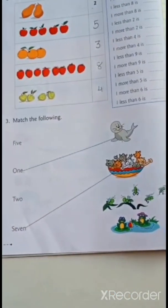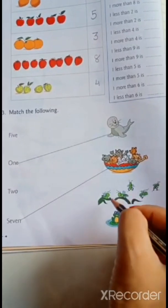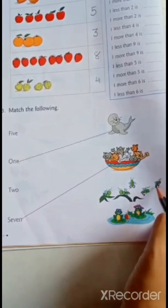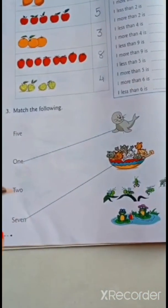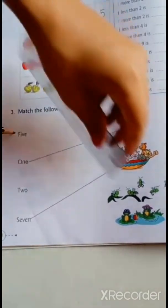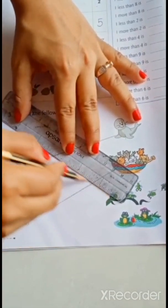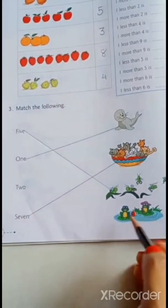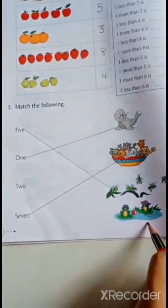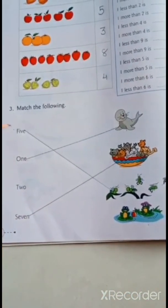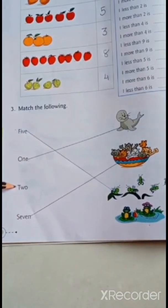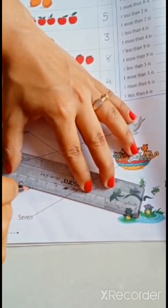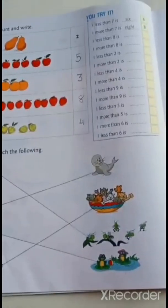Next. B's are here. How many B's? 1, 2, 3, 4, 5. Where is 5 written? F, I, V, E, 5. Here. So, join F, I, V, E, 5 with 5 B's. Next. Frogs. How many frogs? 1, 2. T, W, O, 2. Where is T, W, O, 2? Here. So, join 2 frogs with T, W, O, 2. Here. Here. Here.